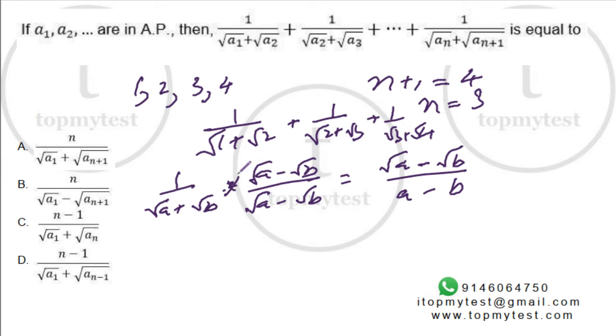In each of the cases, the difference is 1, so the denominator is always 1. This becomes root 2 minus root 1 plus root 3 minus root 2 plus root 4 minus root 3. The middle terms cancel out, leaving you with root 4 minus root 1.